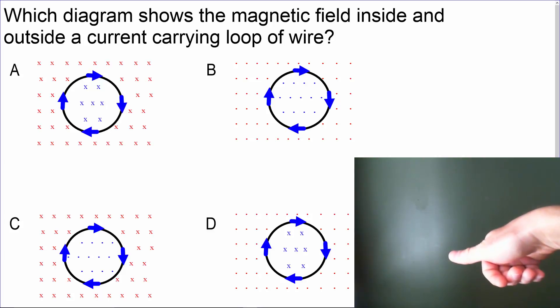Dots are outside the loop, which leaves us with option D as the correct option.